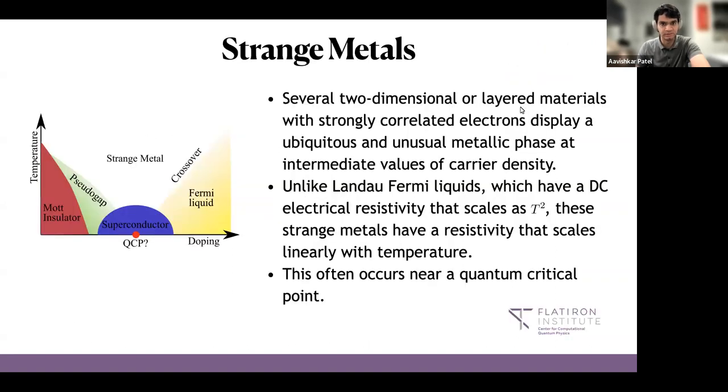So this is just a quick recap of strange metals. I suppose a lot of people here are already familiar with strange metals, but what they are is that there are several two-dimensional or layered materials which have strongly correlated electrons. They display in their phase diagrams compressible metallic phases that are unusual, in the sense that unlike Landau Fermi liquids they have electrical resistivity whose temperature dependence scales linearly with temperature as opposed to T squared.